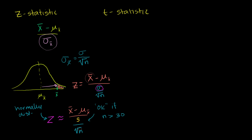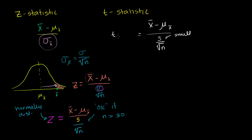If your sample size is less than 30, especially if it's a good bit less than 30, this expression will not be normally distributed. The expression is: sample mean minus the mean of your sampling distribution, divided by your sample standard deviation over the square root of your sample size. If the sample size is small, this statistic is going to have a t-distribution.